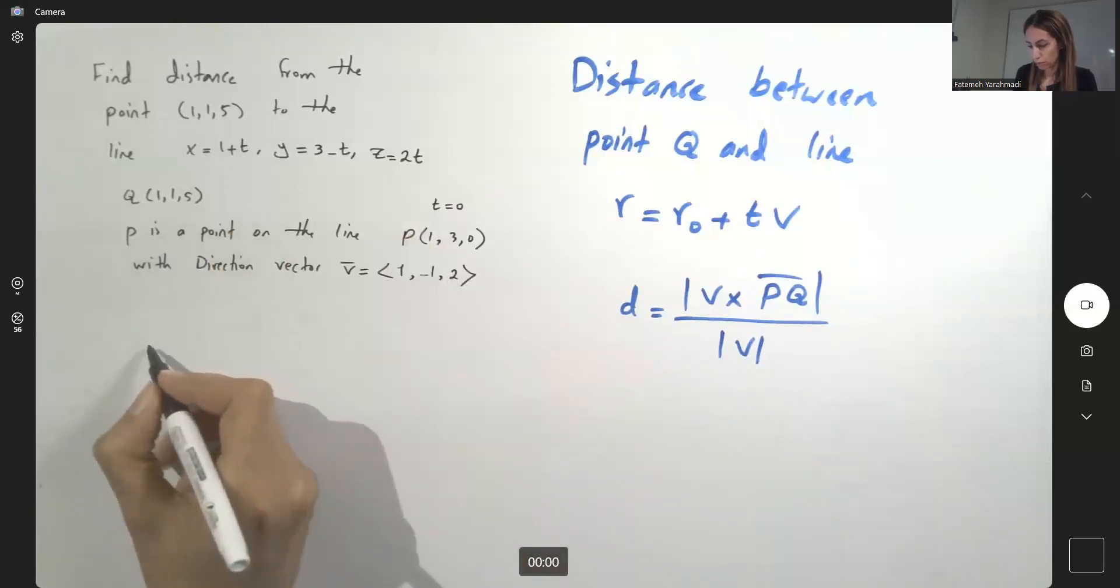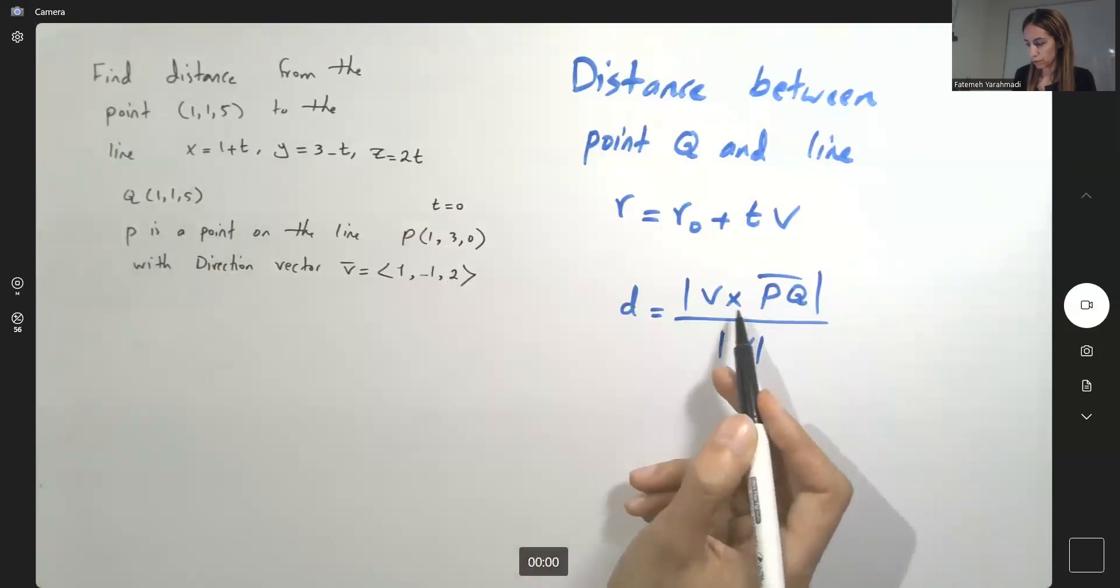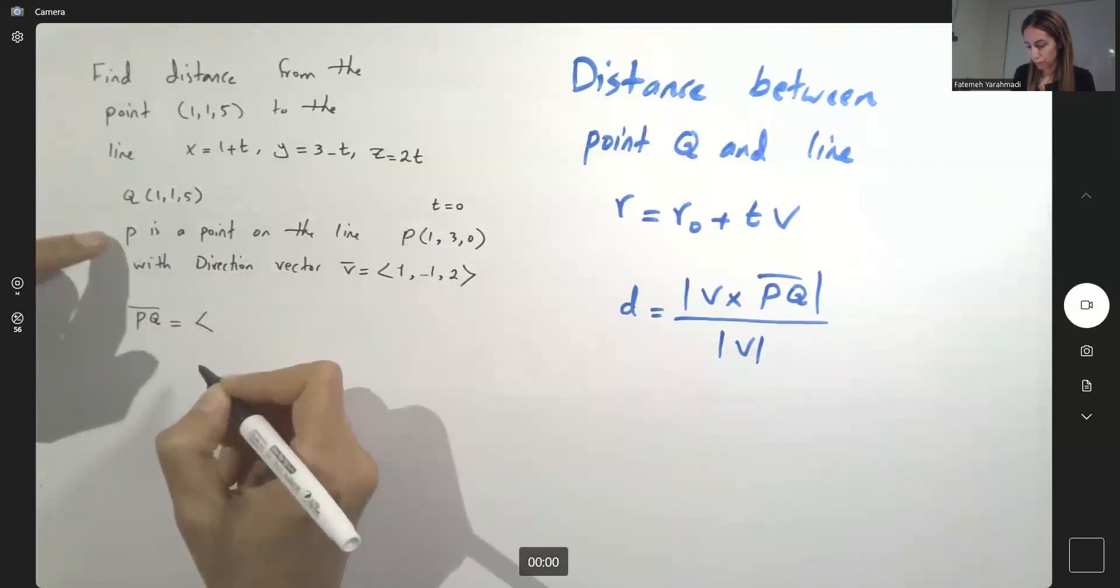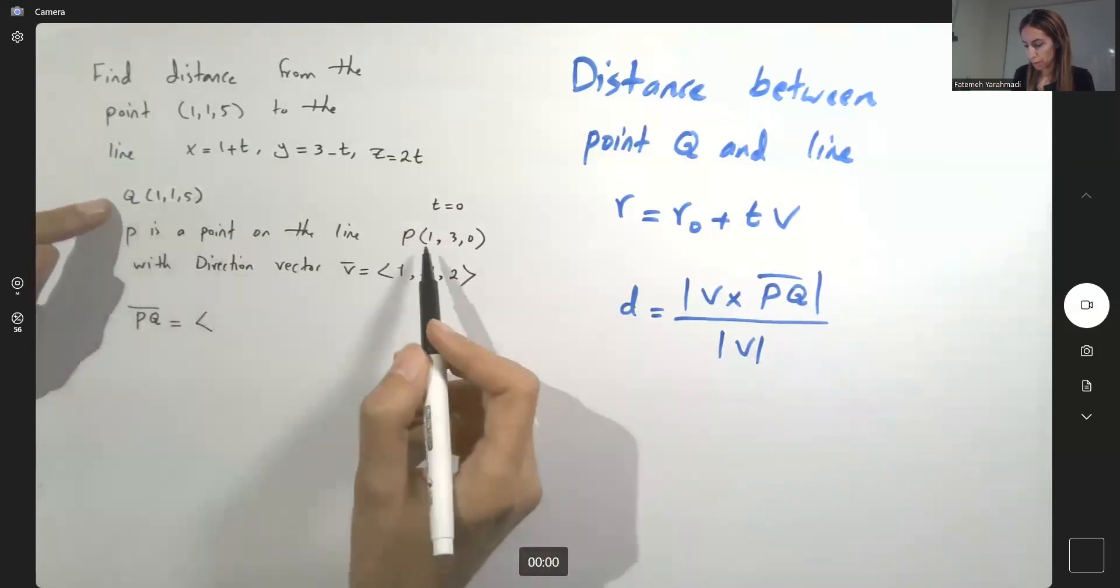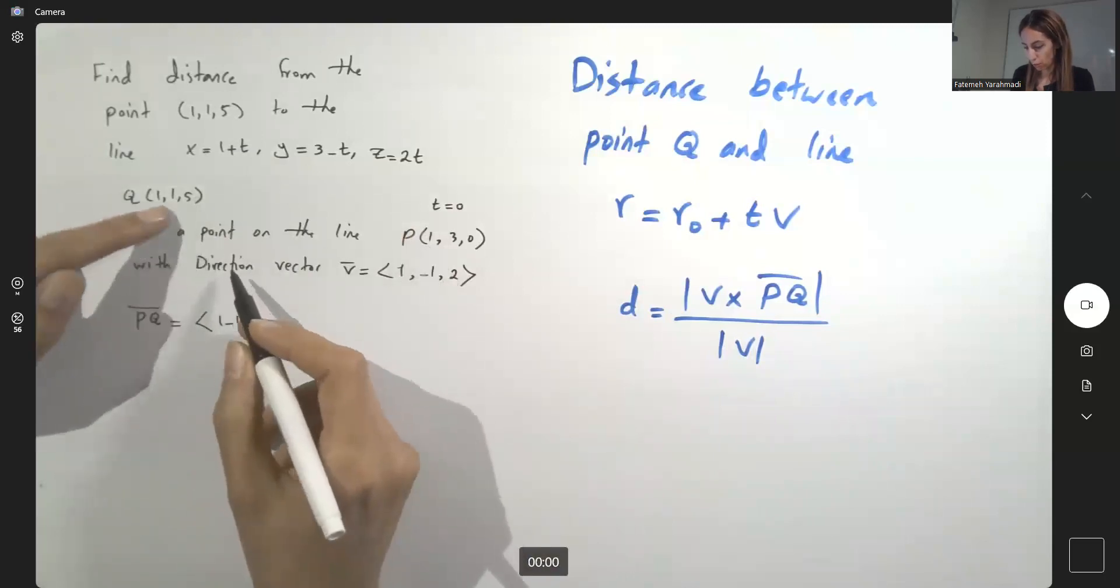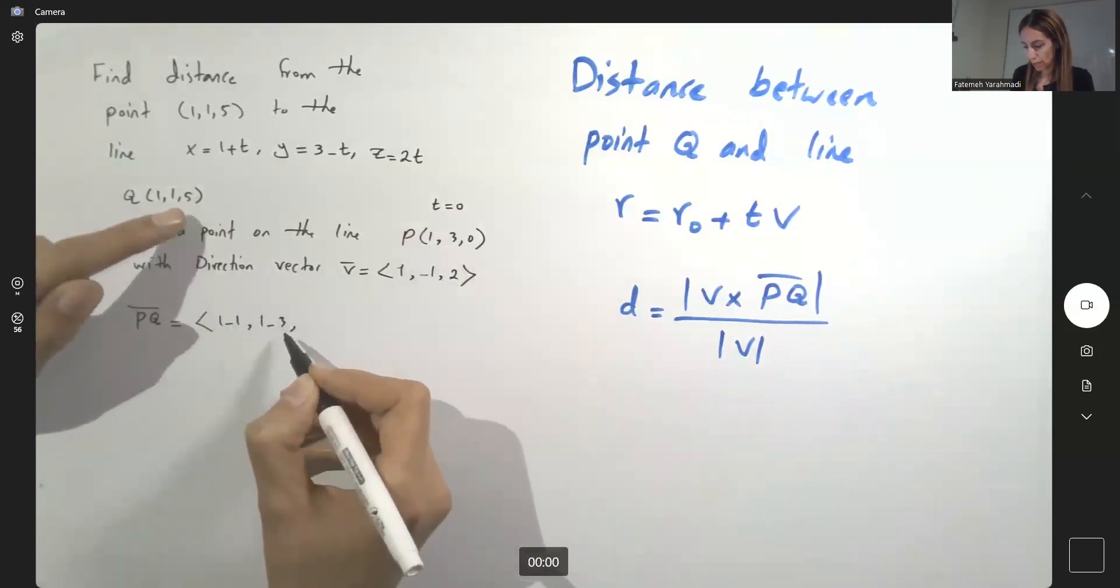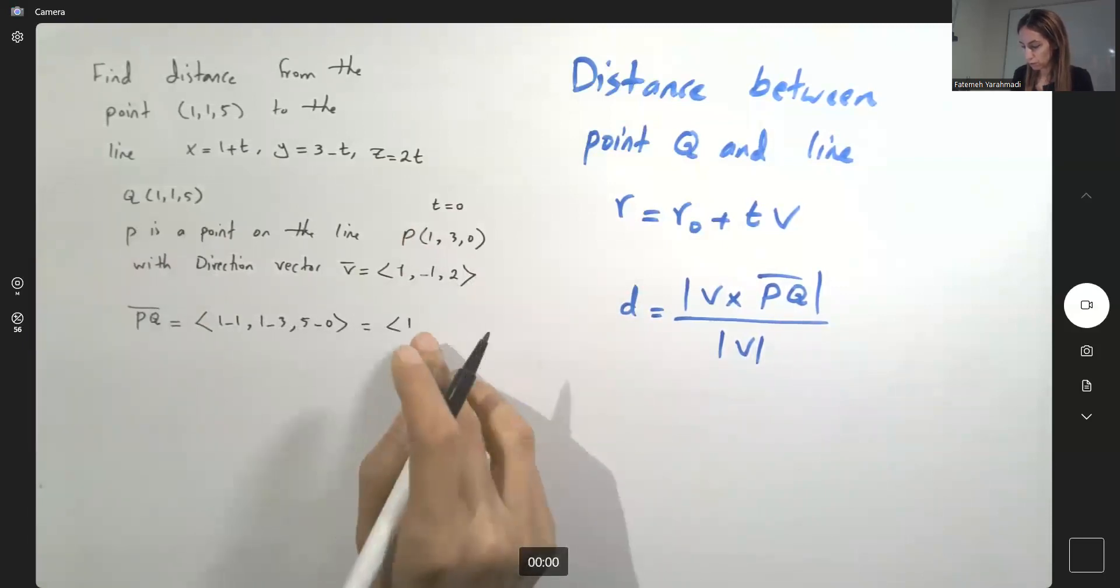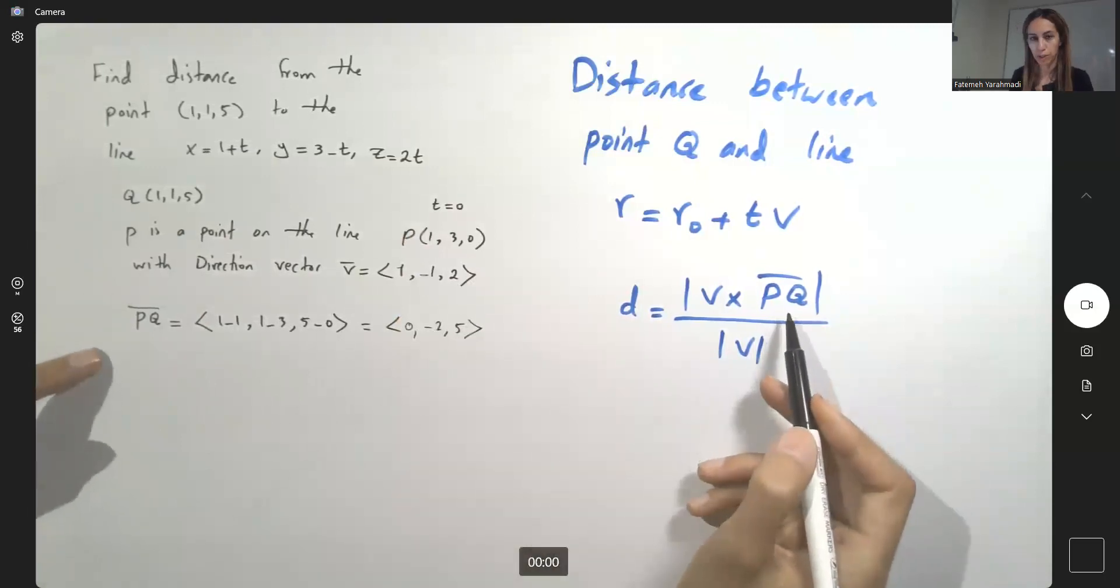D is equal to the magnitude of V cross PQ. So first we need to form PQ. Here you have the elements of Q minus the elements of P: 1 minus 1, 1 minus 3 and 5 minus 0 which gives us 0, negative 2 and 5. So we found PQ.